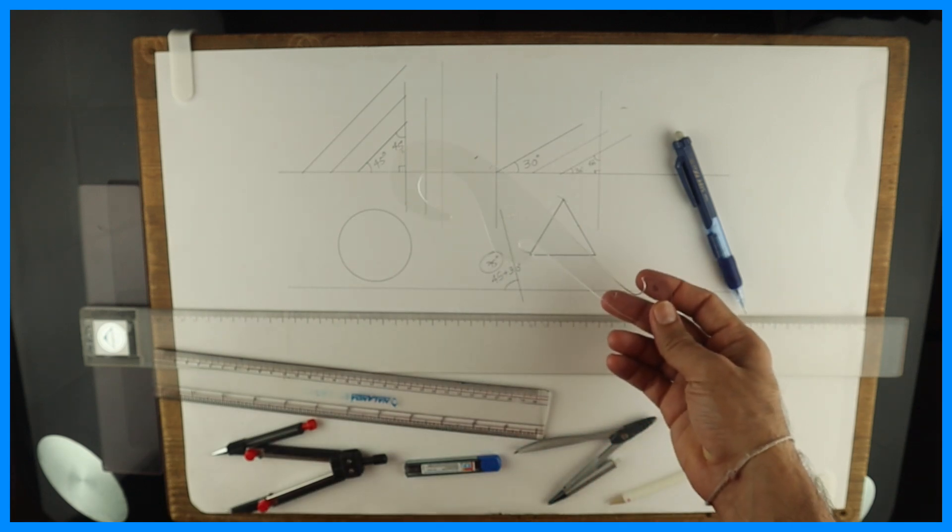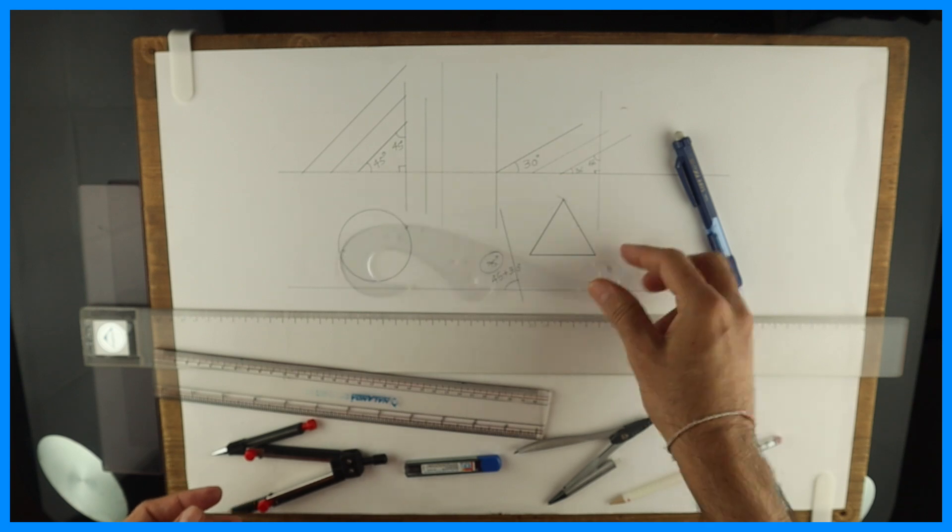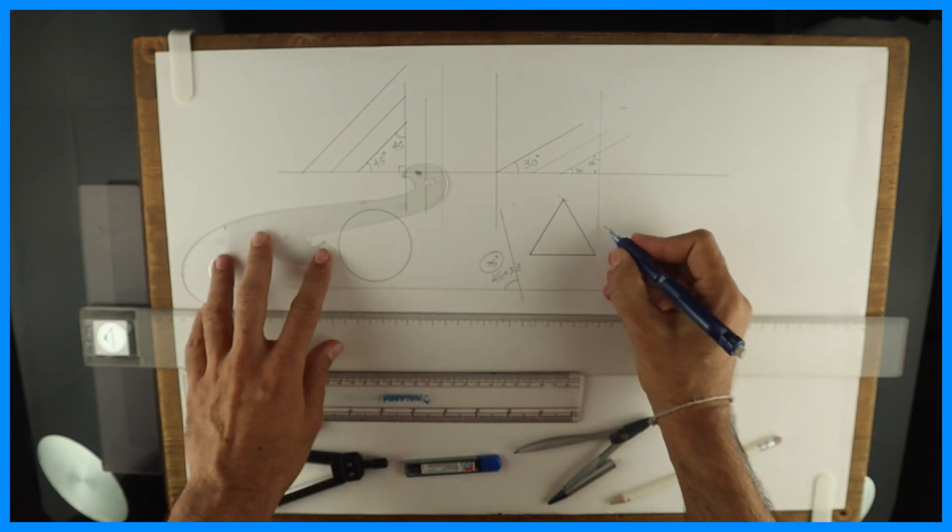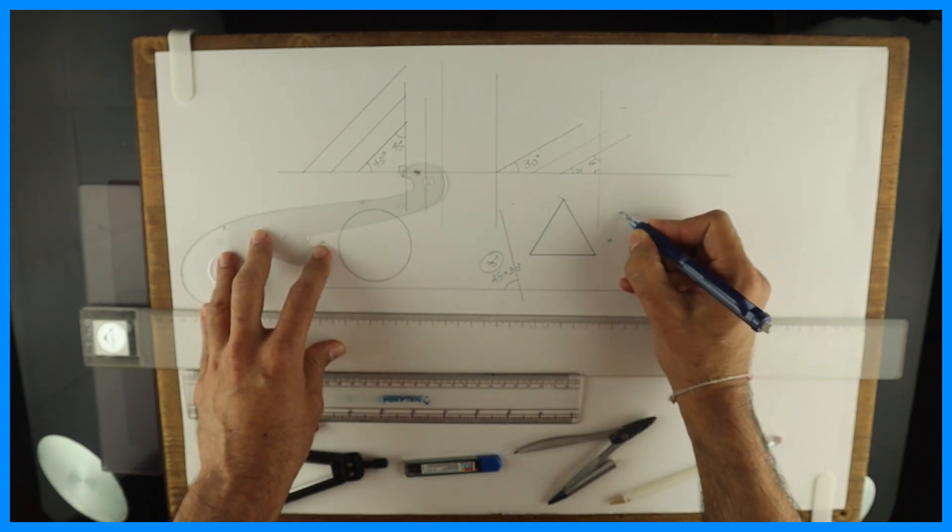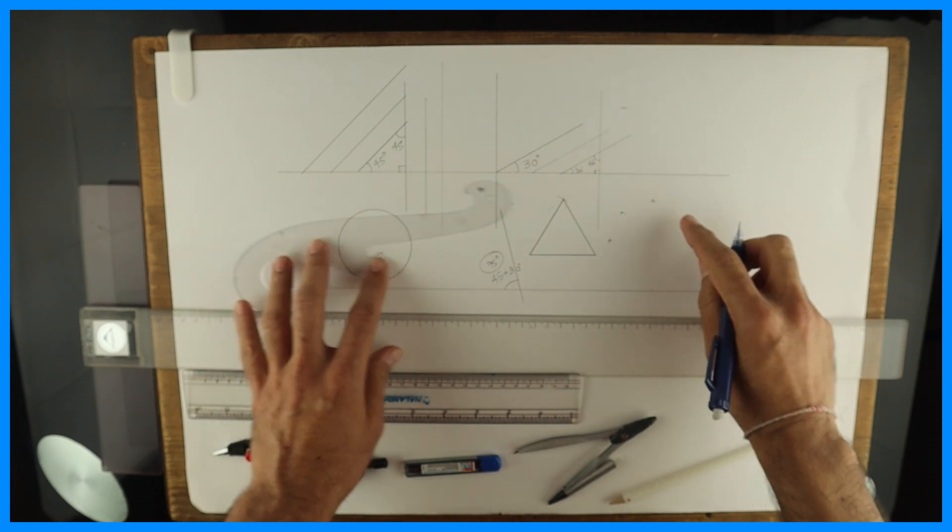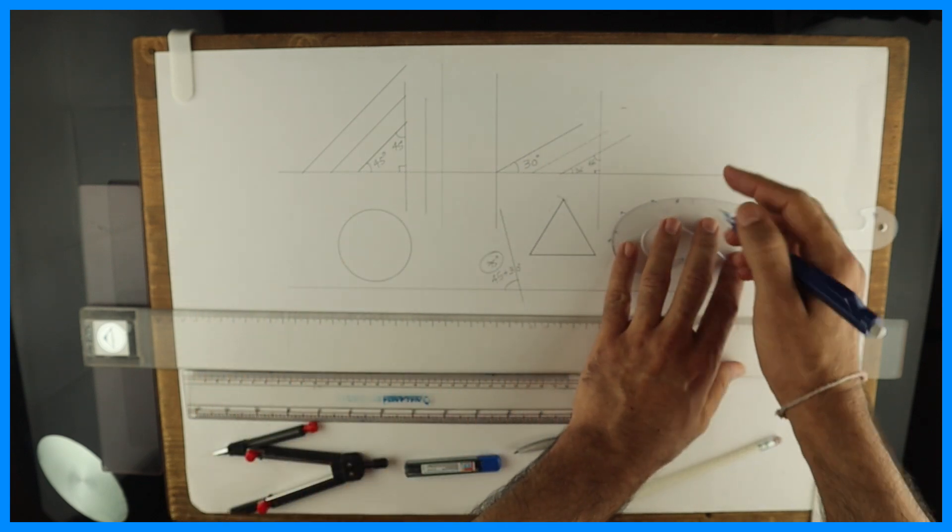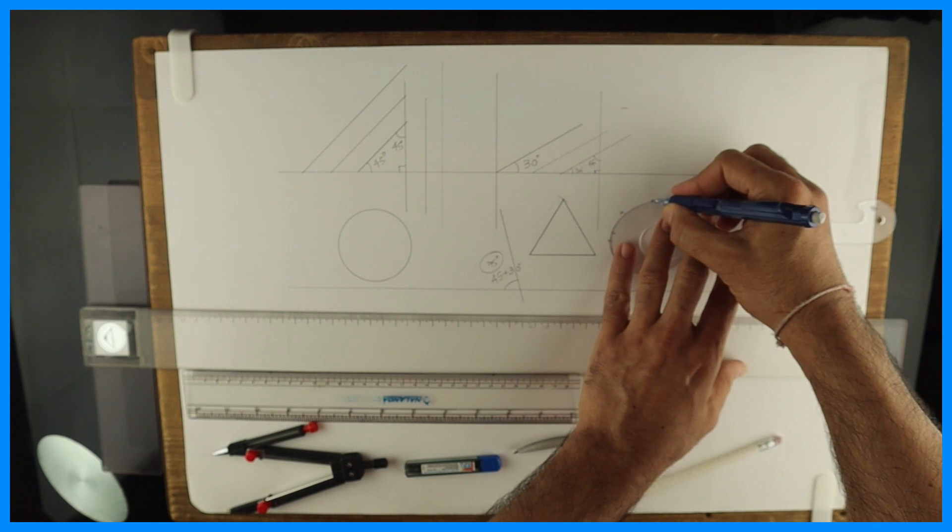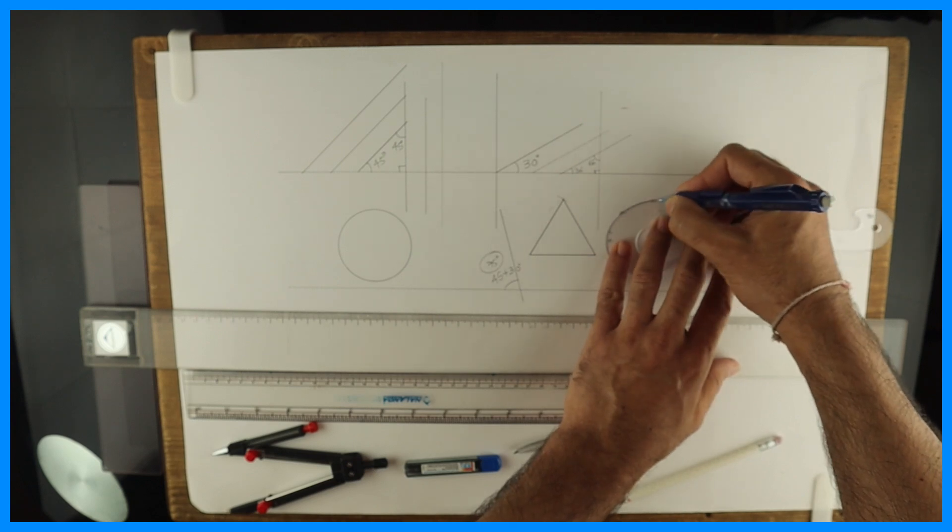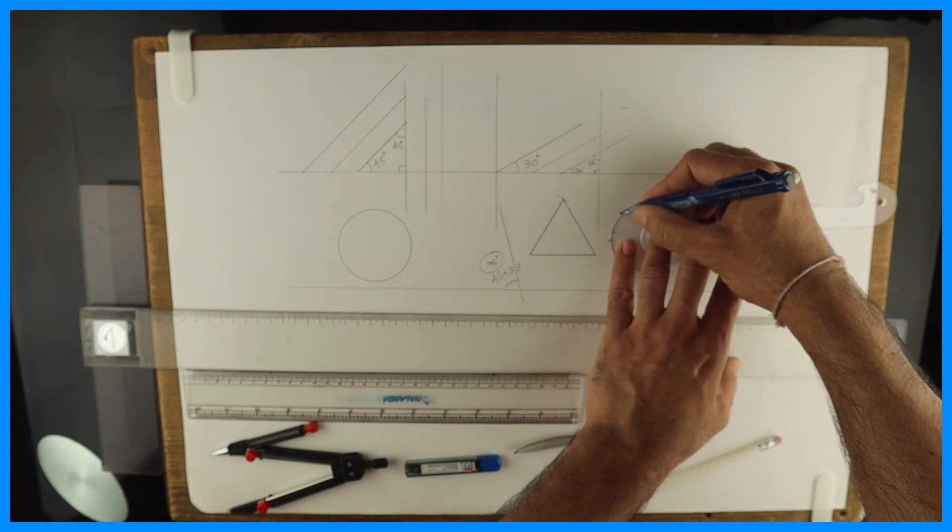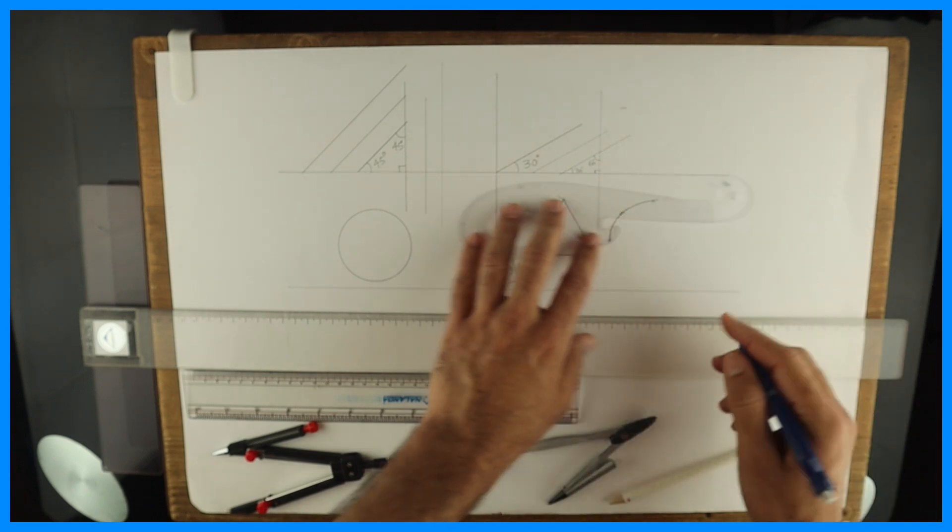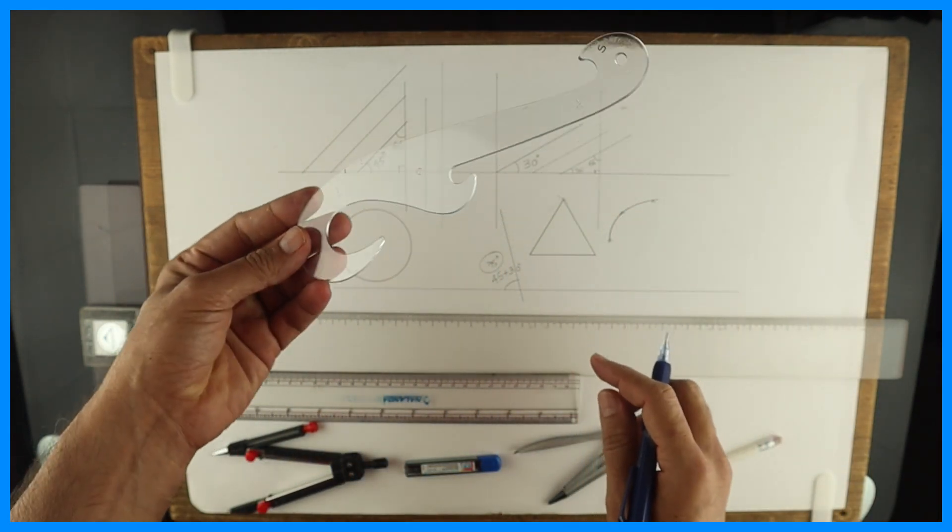Then French curve. We require French curve to draw three points which are not in line. See, like this. Generally we use this in engineering curves and sections of solids where we will have multiple points which we have to join by freehand. So that time we will use French curve. This is called French curve.